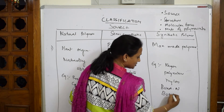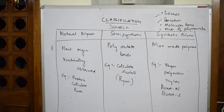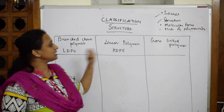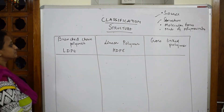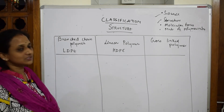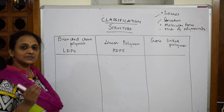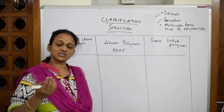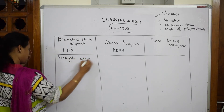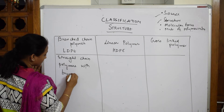Next, classification based on structure. Polymers are classified into branched chain polymers, linear polymers, and cross-linked polymers. Branched chain polymers, also called LDP (low density polyethylene), are straight chain polymers with branches in between.